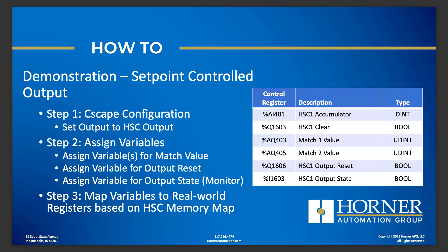Let's do a demonstration for the setpoint controlled output. The process: start with configuration, assign variables for match values, output reset, and current match status. I'll also find the accumulator value for the high-speed counter to monitor on screen. For my XL7: the high-speed counter number one accumulator is tied to AI 401; I've assigned the clear bit at Q1603; I've configured both match value variables mapped to their AQ values; I have the output state monitor tied to the percent I bit; and I have the output reset bit.